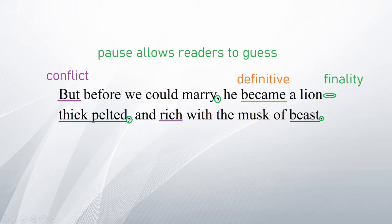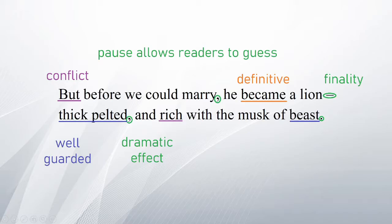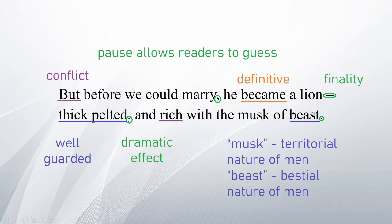'Thick-pelted and rich with the musk of beasts.' Thick-pelted could mean this person, who seemingly turned into a lion, is well-guarded, emanating an aura of authority. Note this phrase is enclosed in pauses, which creates dramatic effect. The word 'rich' could be used in a number of ways — list down all the ways and try using it to draw out other theories. Through the word 'musk', you can tell the persona is exploring the territorial nature of men, complemented by the noun 'beast', exploring the bestial nature of men.